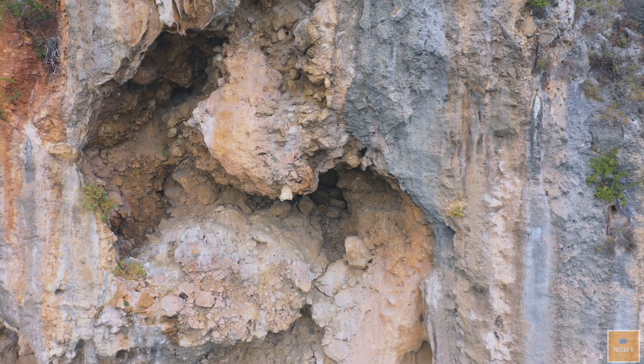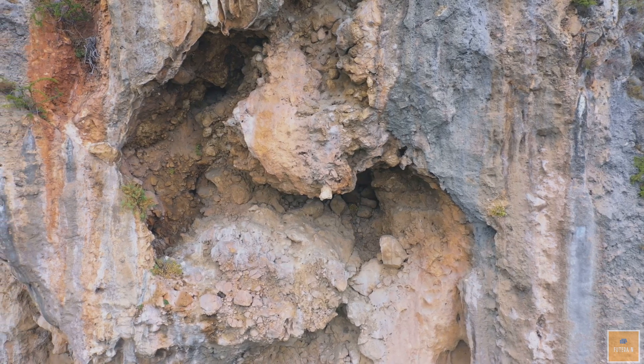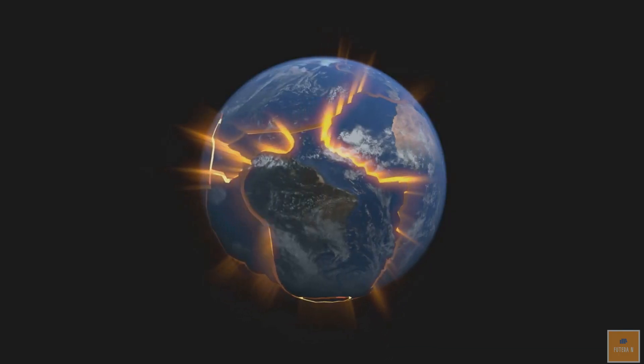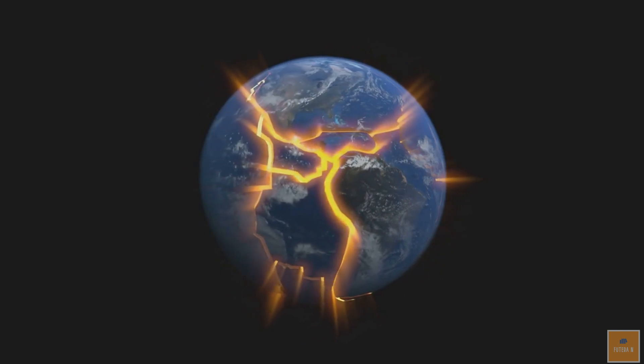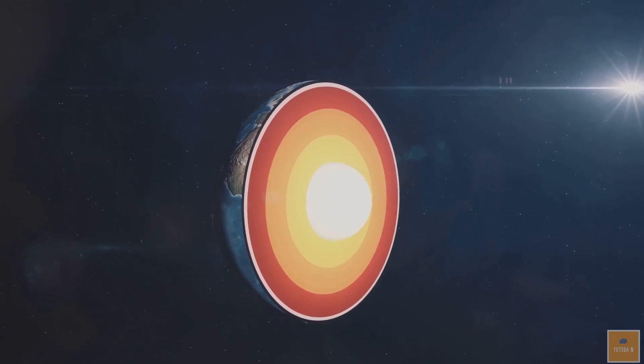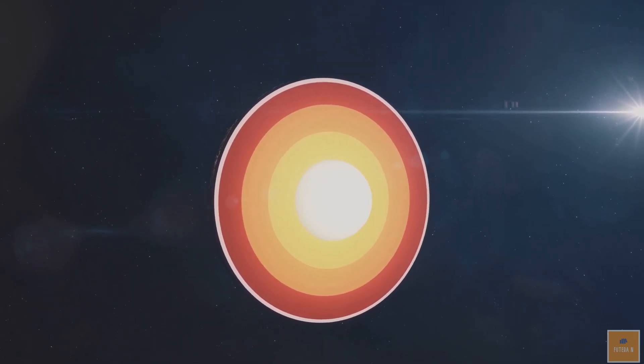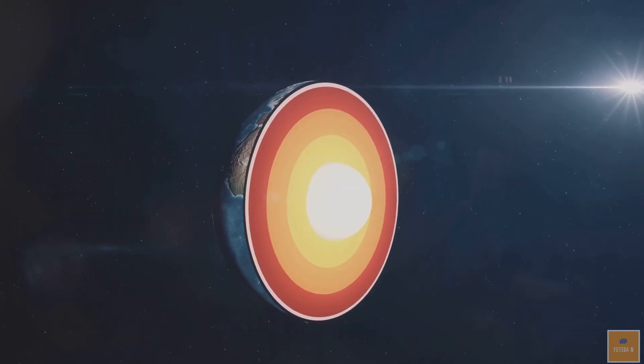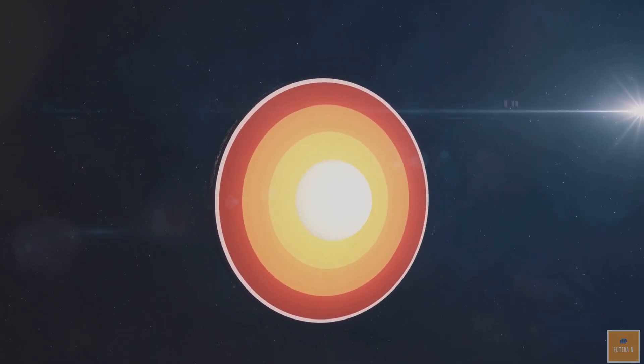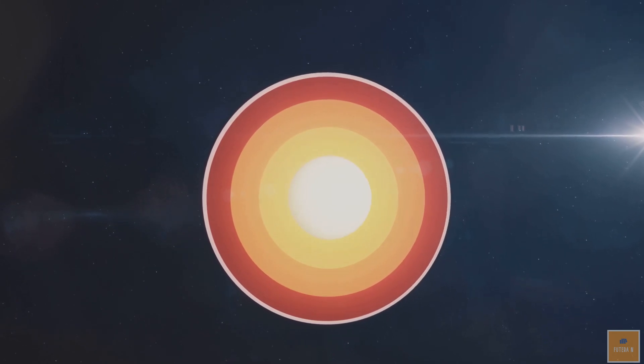The crust is the outermost layer and is relatively thin compared to the other layers. The mantle is the thickest layer and is made up of hot molten rock. The outer core is also made up of molten rock, but it is even hotter than the mantle. Finally, the inner core is the hottest and densest layer, consisting of solid iron and nickel.